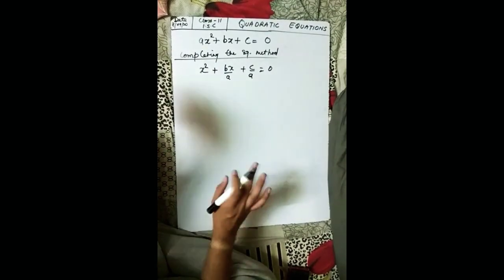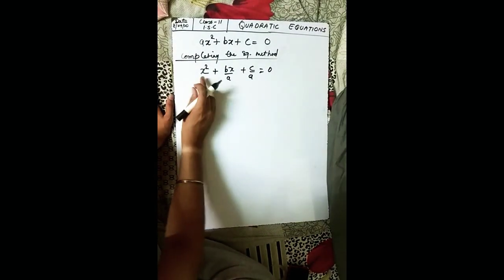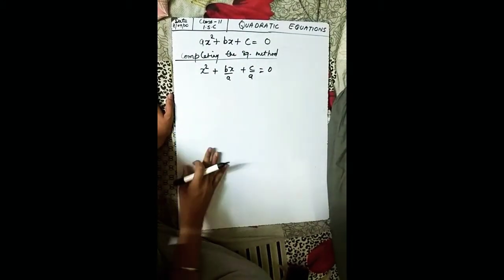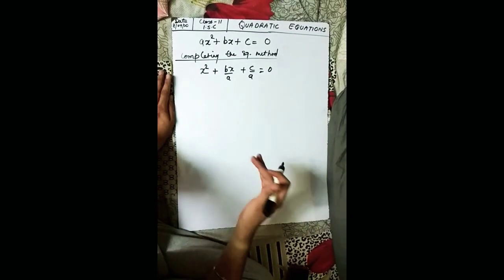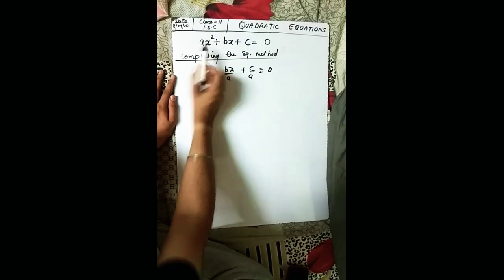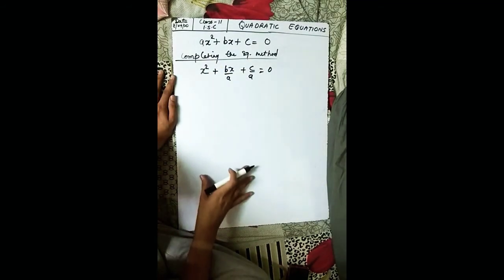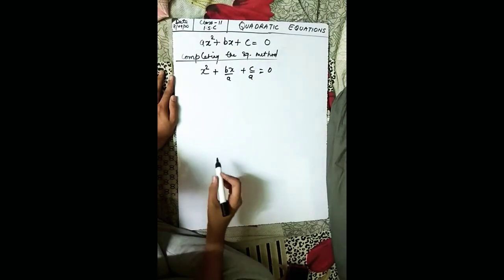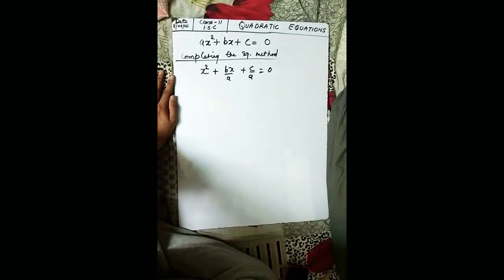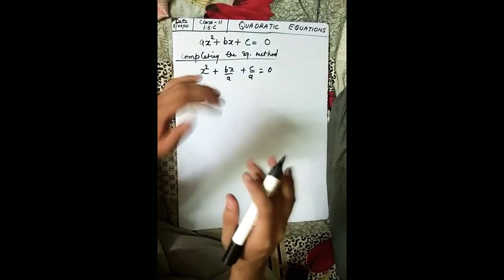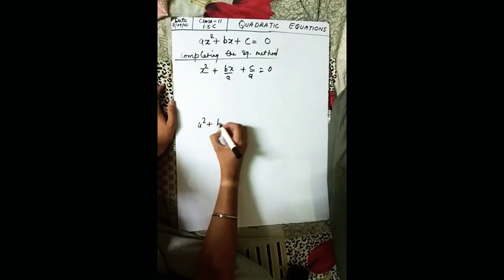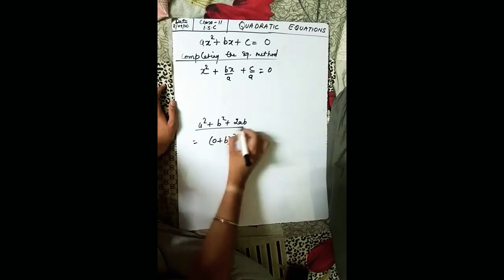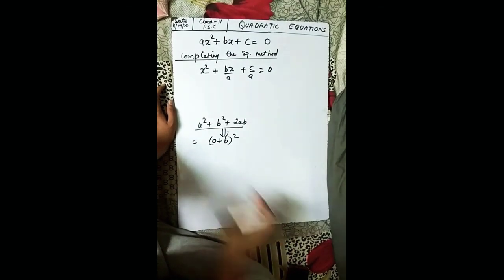If a question already has x² without a coefficient, you don't need to divide. Now, as the name suggests, completing the square means we need to complete a perfect square. For example, if you have a² + 2ab + b², we can write it as (a + b)². We need to do the same thing here, but we only have one square term.